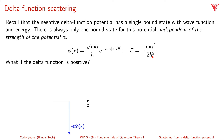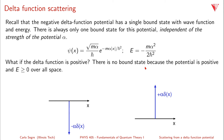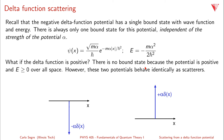What if the delta function is positive? A positive delta function means plus alpha·delta(x). There are clearly no bound states because the potential is positive, and E is always greater than or equal to zero overall. Any particle that exists there has energy greater than zero. But both the positive and negative delta functions with the same energy greater than zero behave exactly the same as scatterers.